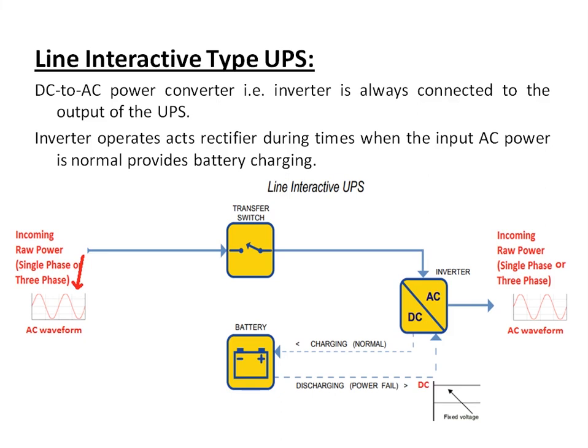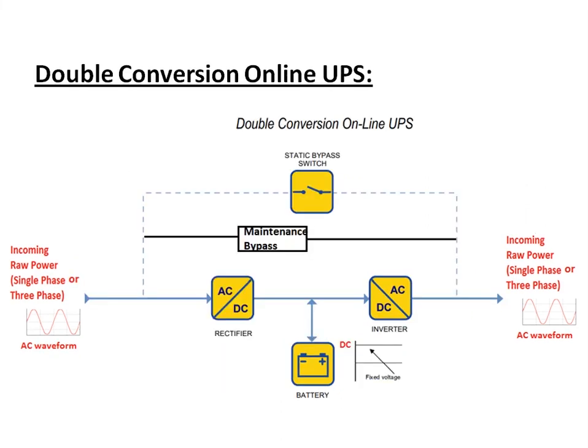The inverter acts as a rectifier during the time when incoming AC power is available, and is used for charging the battery. In case of any power outage or power failure, the UPS detects it and the inverter gives the output through the battery. This brings us to the double conversion online UPS, which is commonly used in industries.